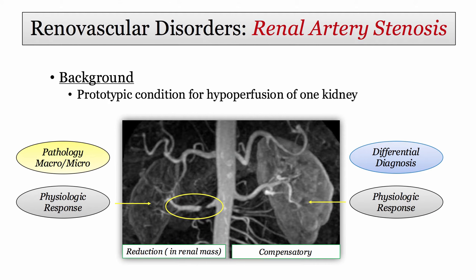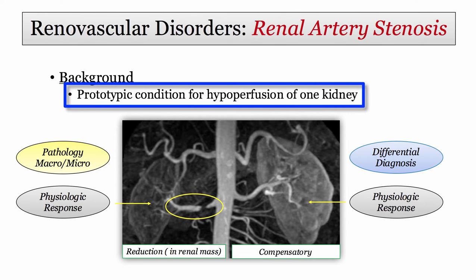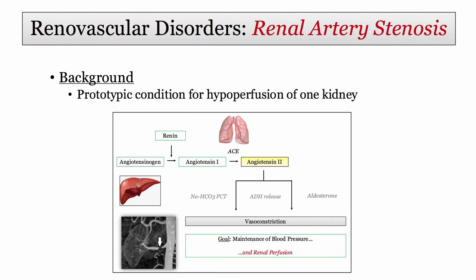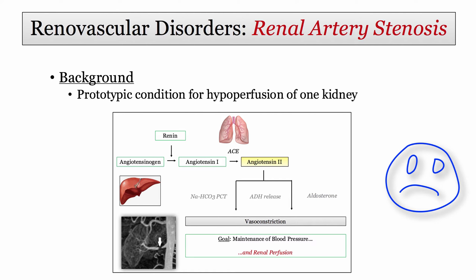Moving on to renal artery stenosis, this slide pretty much summarizes the full syllabus for Step 1. You just need to think about renal artery stenosis as the prototypic condition for hypoperfusion of one kidney — all the derivatives follow from this concept. That should generate some unpleasant flashbacks as you recall our introductory recordings on blood pressure regulation — hypoperfusion means activation of the renin-angiotensin system.